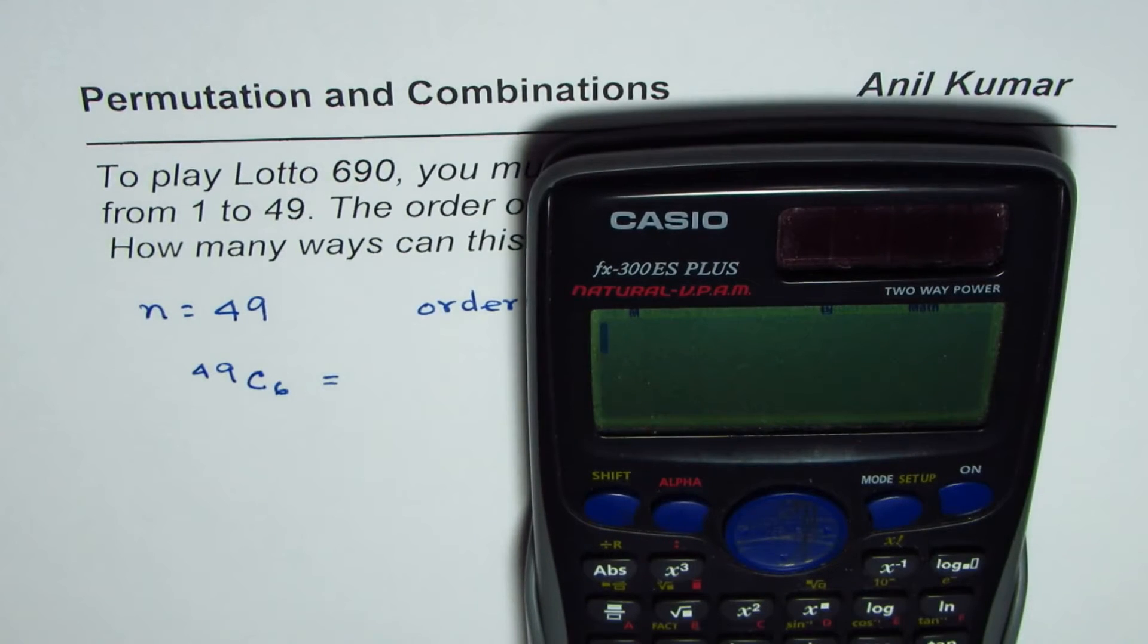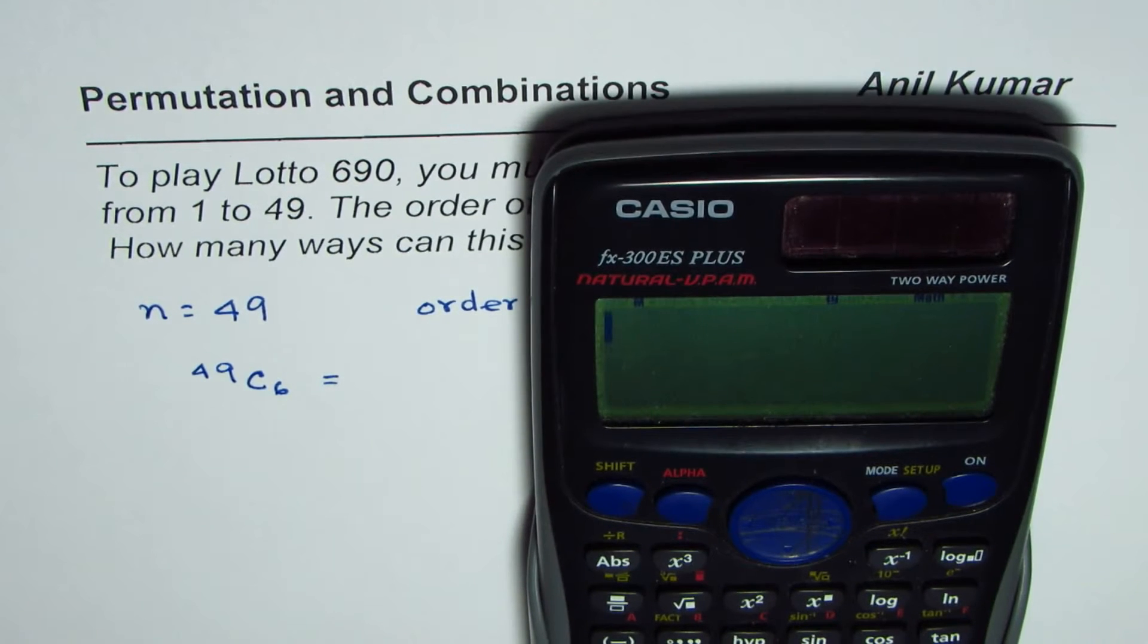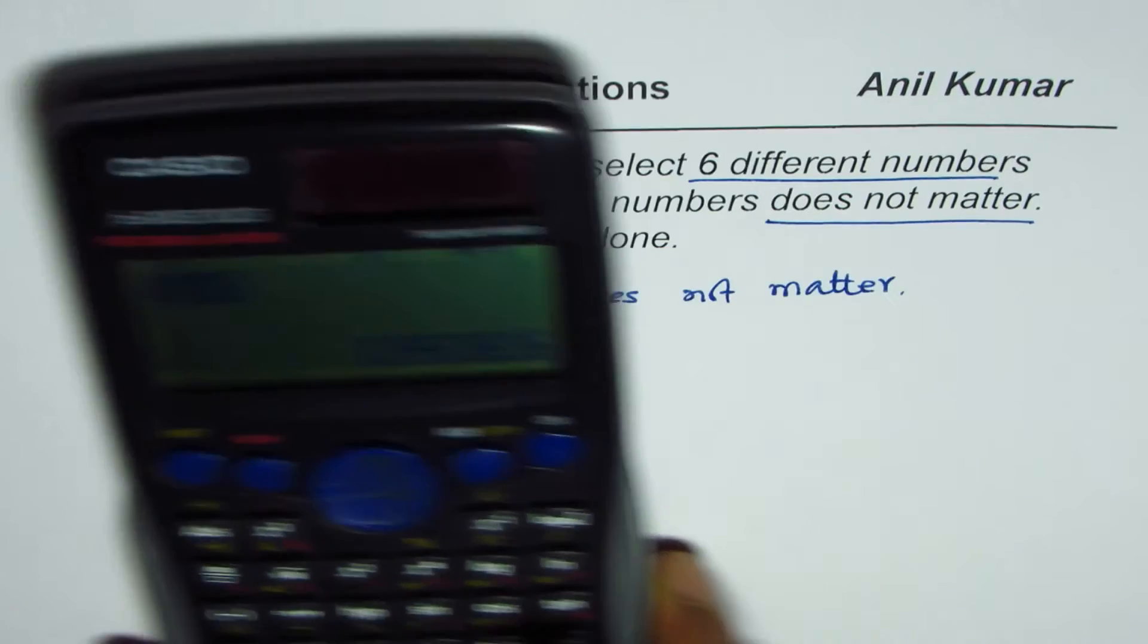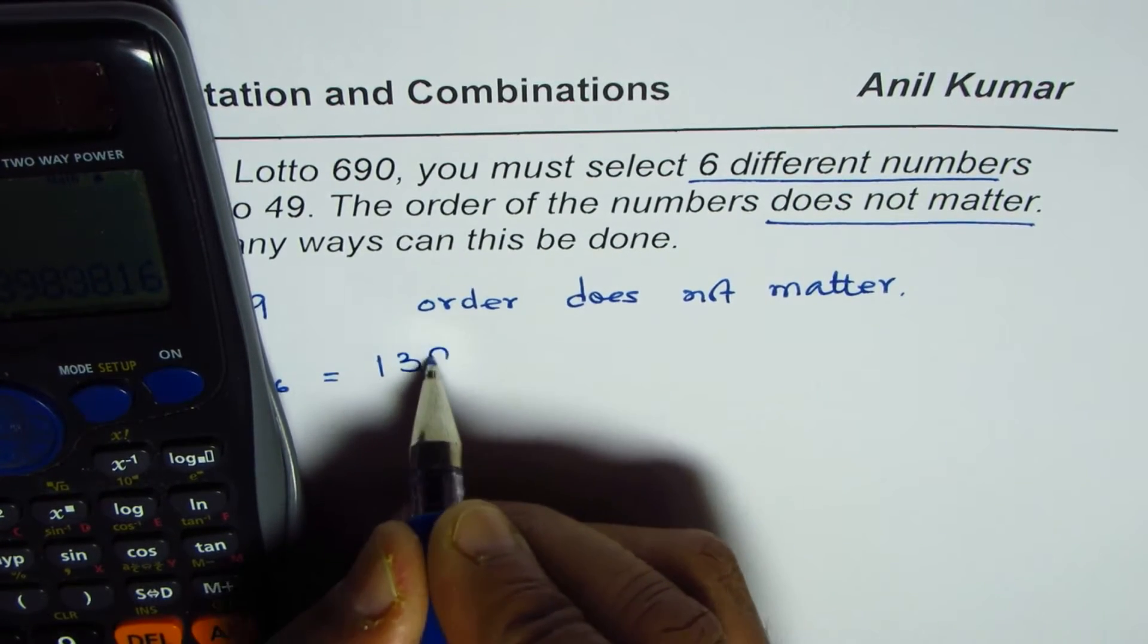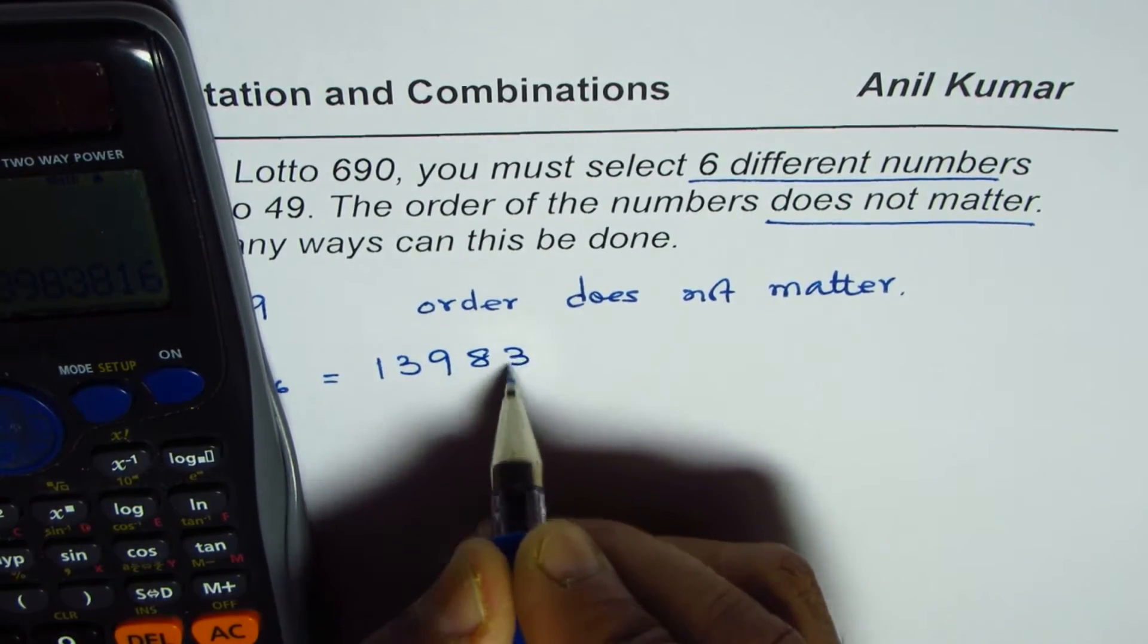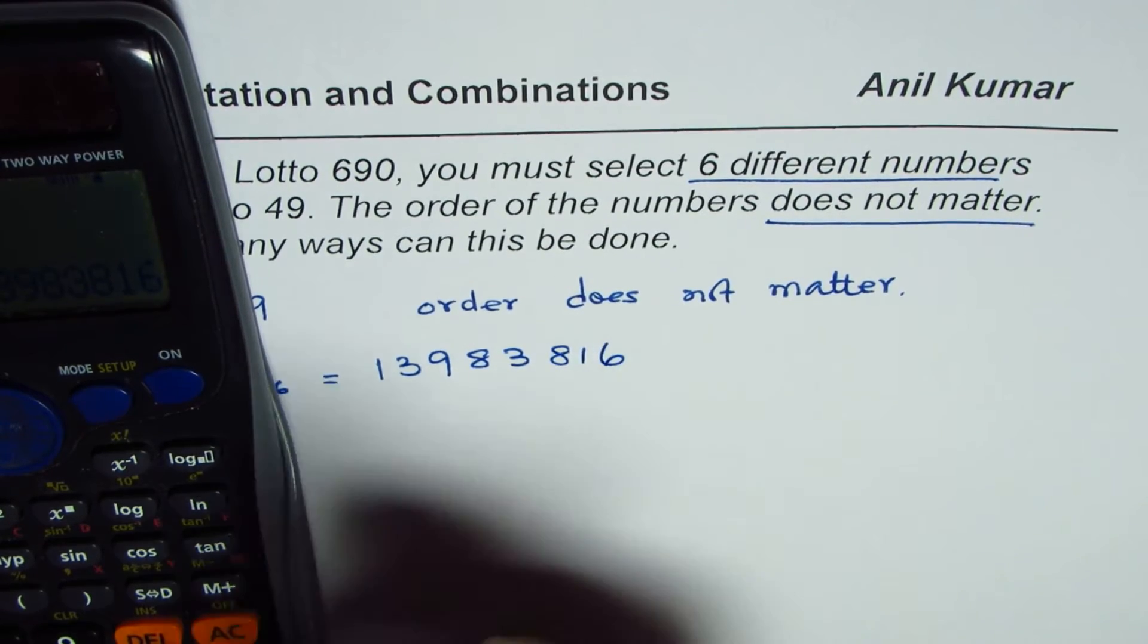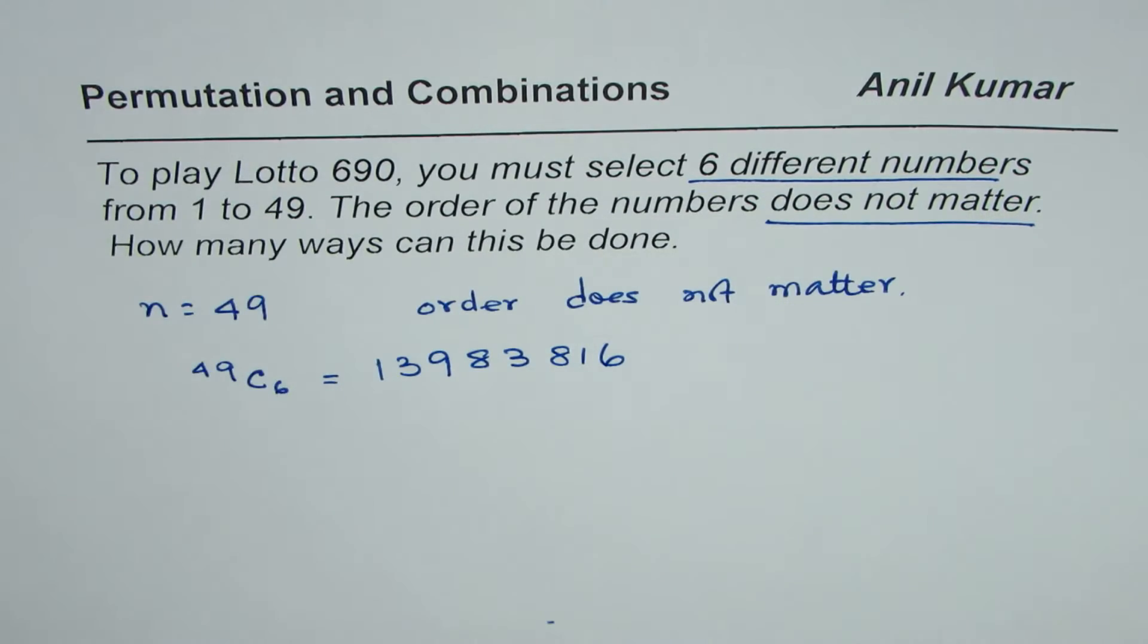So we can write down, we can calculate the answer, which is 49C6 equals to 13,983,816. So that is one way of doing it.